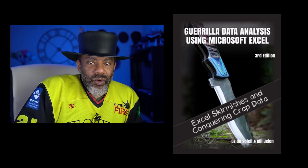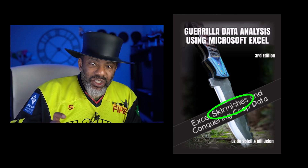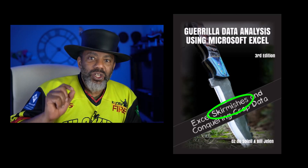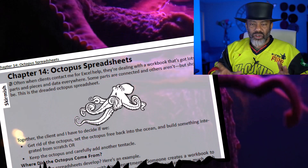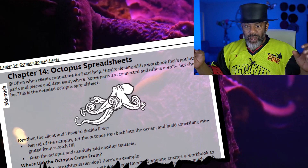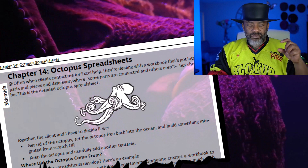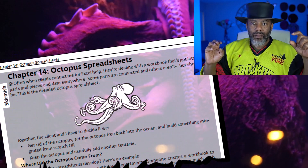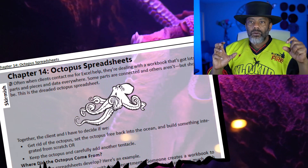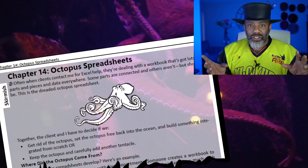What's in the book now is what we call skirmishes — those are the things that aren't directly Excel, but they impact what we do with Excel and data. One skirmish: dealing with octopus spreadsheets. Those are spreadsheets that have a lot of things going on in them, different pages, but they aren't really connected like they need to be. If you make a change in a workbook, you should have one place to make that change if it has impact throughout the workbook.